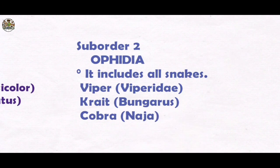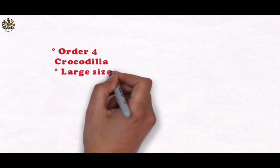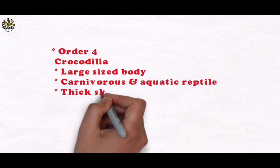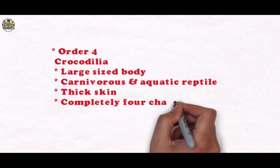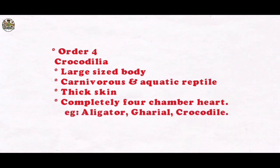Order 4: Crocodilia. Large-sized body, carnivorous and aquatic reptiles. They have thick skin, completely four-chamber heart. It includes alligator, crocodile, etc.